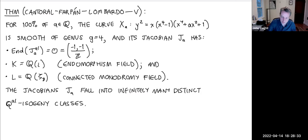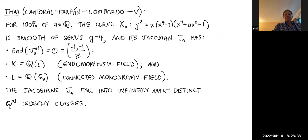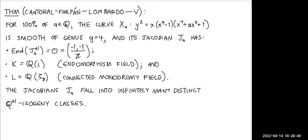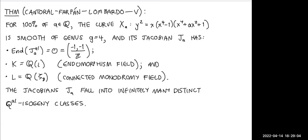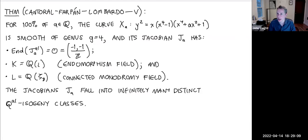Thank you. Are there any questions? I believe this gives the first infinite family of examples where K ≠ L, and in fact the first example of any kind where L ≠ K. The quaternionic structure is really what makes this possible.